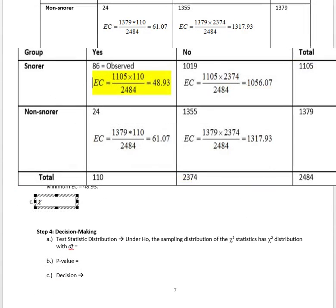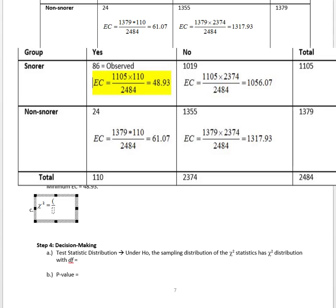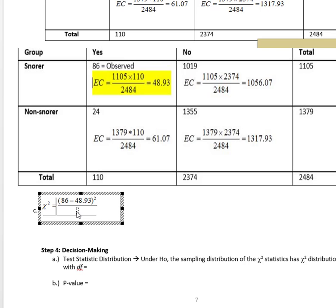Next, because my conditions are met, I can proceed to calculate the chi-square test statistic, which is observed minus expected, squaring that difference, and then dividing by the corresponding expected. So if I were looking at snoring and yes heart disease, I have an observed of 86 minus an expected of 48.93, square that difference, and then divide by that expected of 48.93. I will continue to do that for each of the cells.